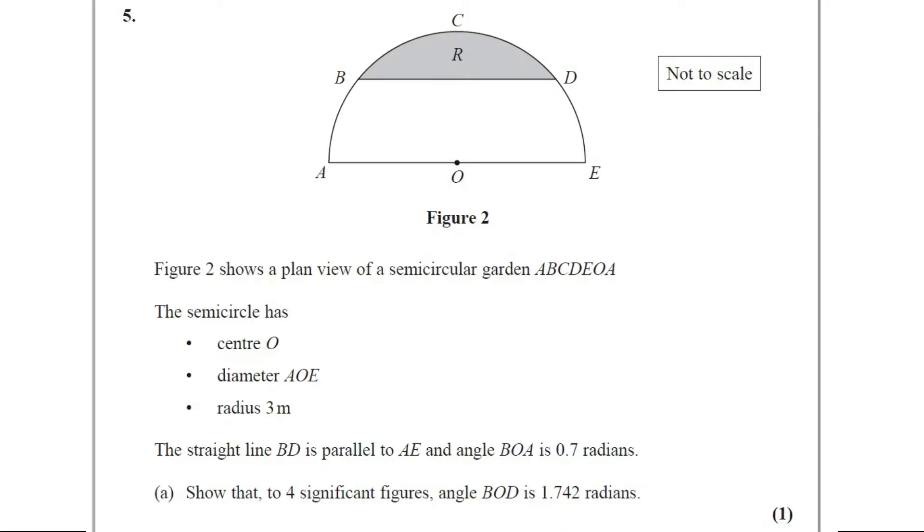Question number 5. Figure 2 shows a plan view of a semicircular garden ABCDEOA. The semicircle has center O, diameter AOE, and radius 3 meters.